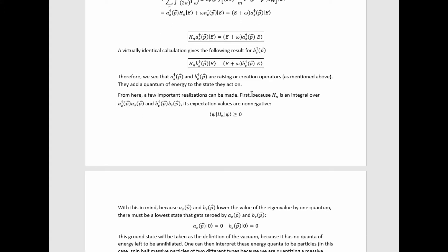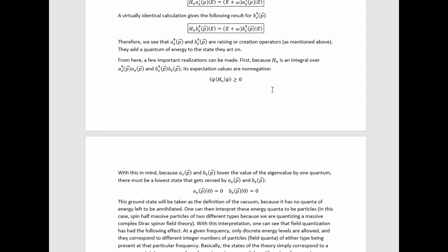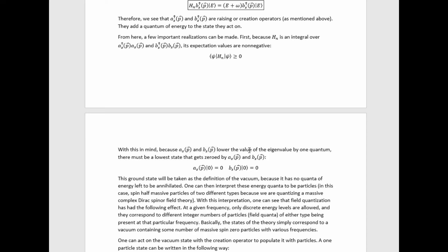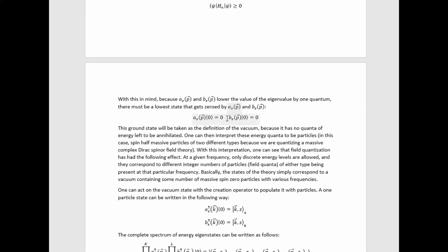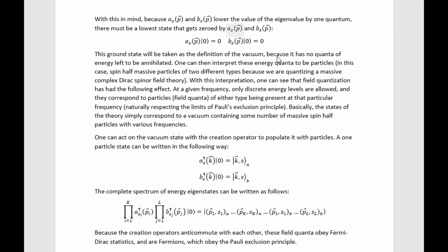A few important realizations follow. Because the Hamiltonian is an integral over two products, its expectation values are necessarily non-negative. Since a of p and b of p lower the eigenvalue by one quantum, there must be a lowest state — the vacuum — that gets zeroed by a of p and b of p. These energy quanta can be interpreted as particles: spin-half massive particles of two different types, since we are quantizing a massive complex Dirac-spinor field theory. At a given frequency, only discrete energy levels are allowed, corresponding to field quanta of either type, respecting Pauli's exclusion principle.